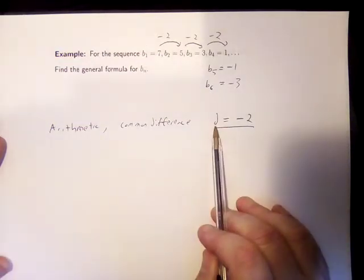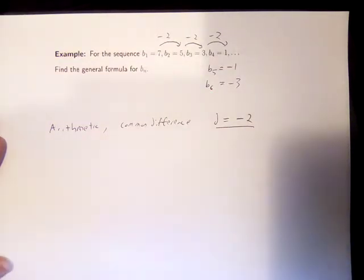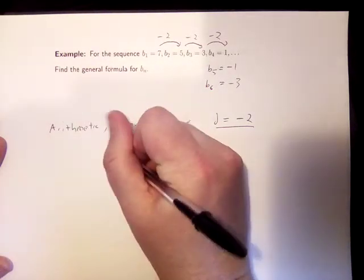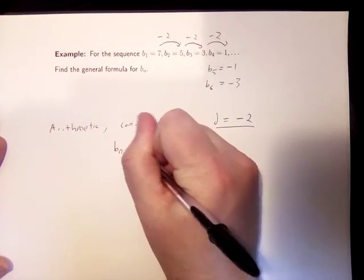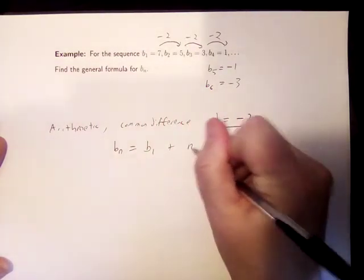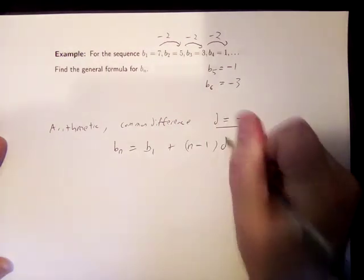So the common difference, how much is being added, is negative 2. We know that the general formula for an arithmetic sequence is made out of your first term plus n minus 1 groups of your common difference.